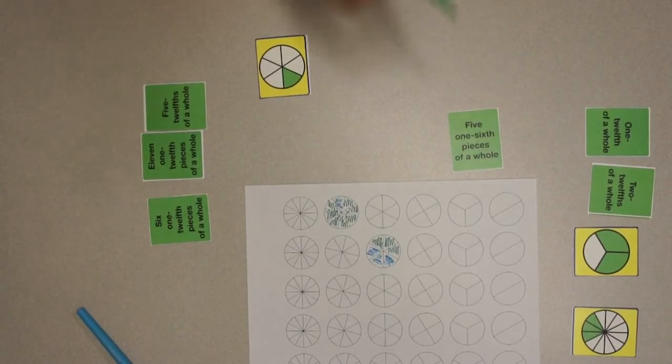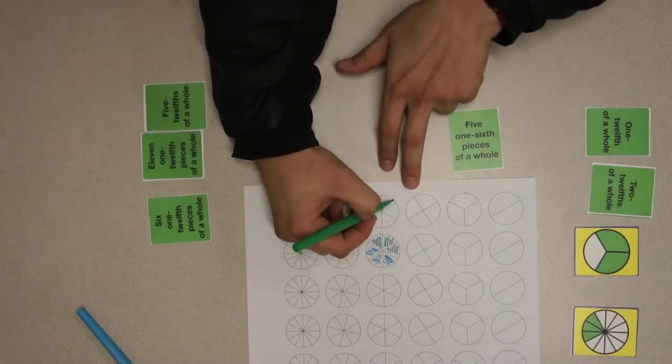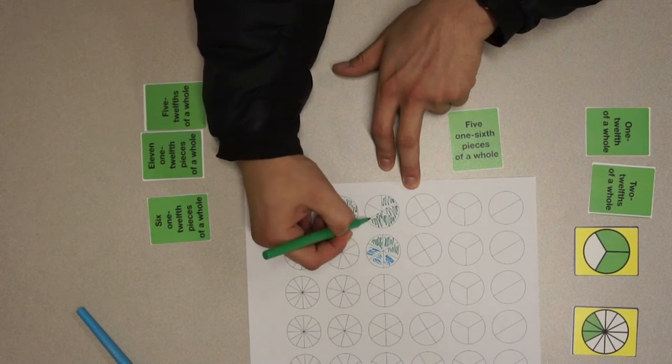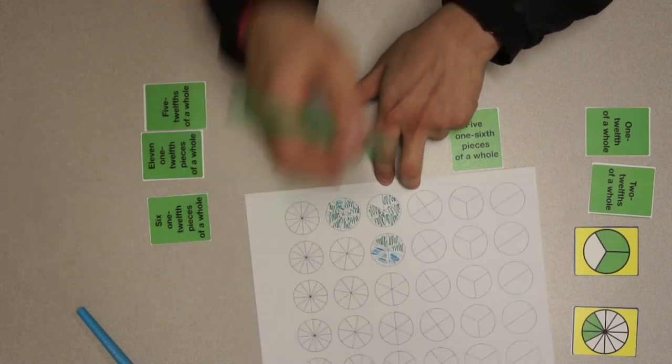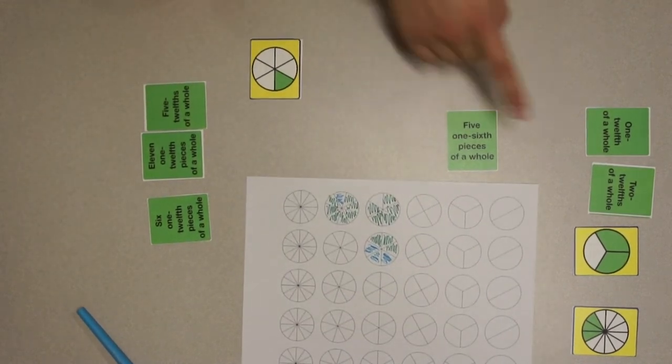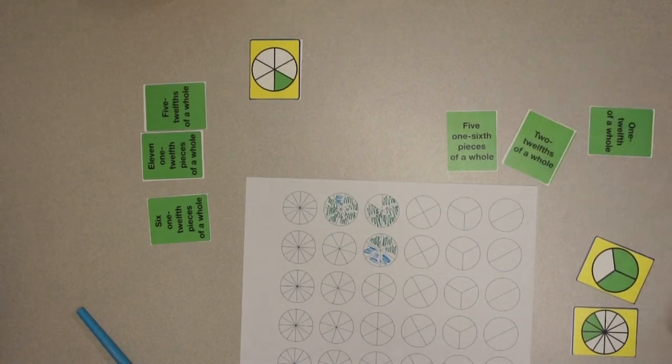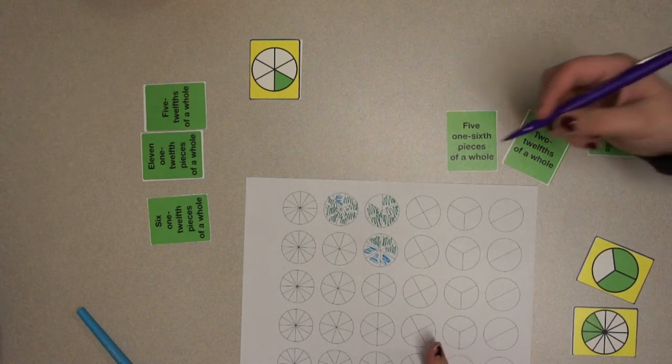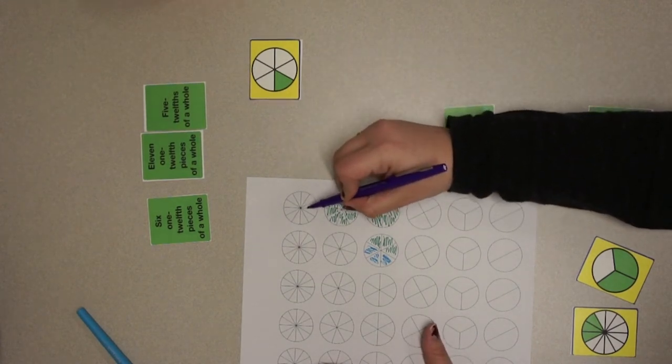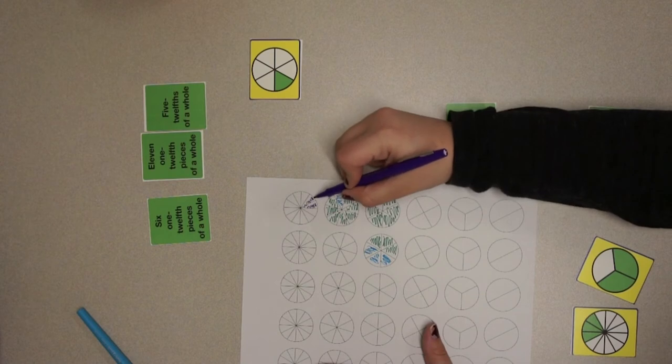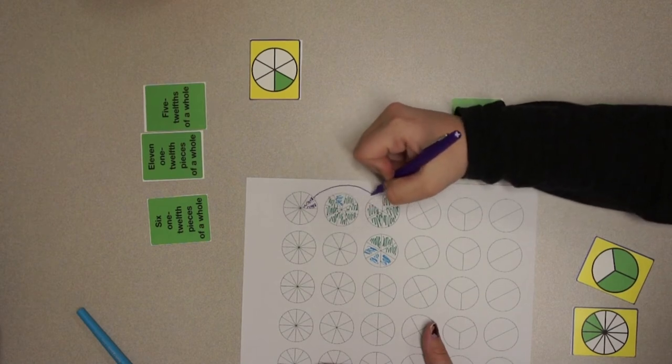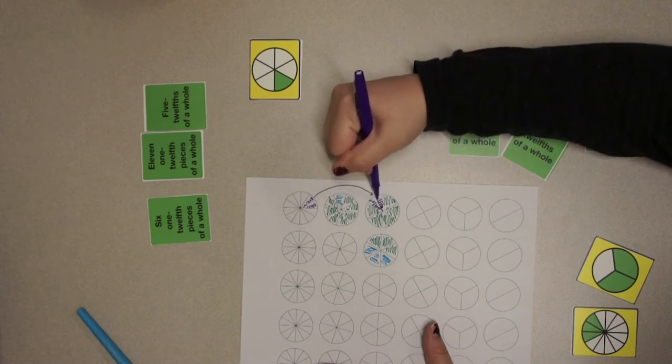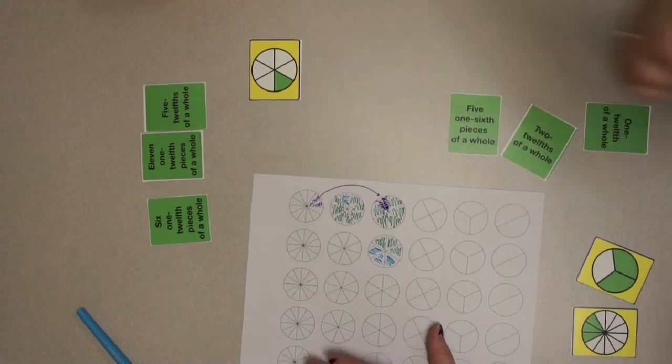Here, we can see a player playing five one-sixths pieces of a whole from his hand. He colors in that part of a pie cut into sixths. Then he points at another card, two-twelfths of a whole. The player colors in two parts of a pie that is cut into twelfths, then notices that it is the same size as one part of a pie cut into sixths. The player transfers that amount to complete the pie cut into sixths.